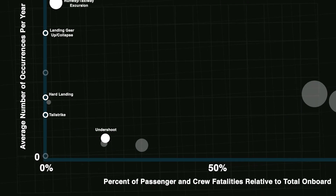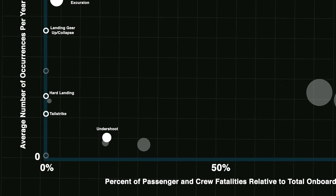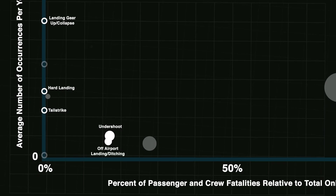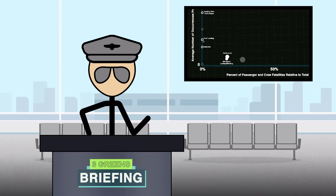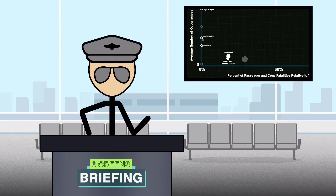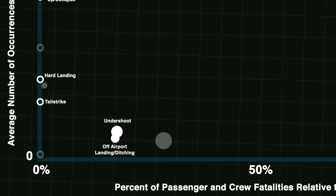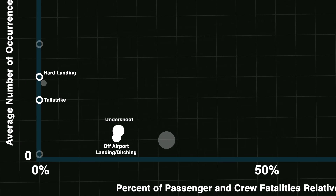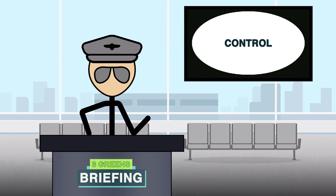Interestingly, lying beside undershoots are off-airport landings and ditchings. These would come after some catastrophic failures, but you can see they don't result in any more people dying, showing how keeping the aircraft in control all the way to the ground is key to keeping a crash survivable.